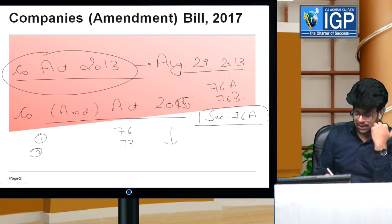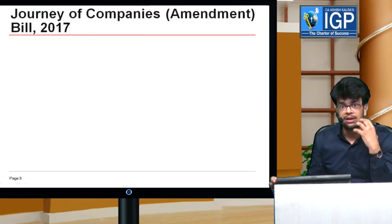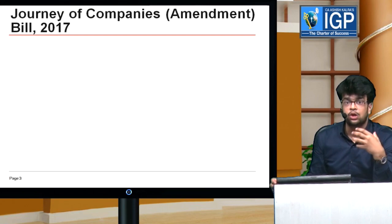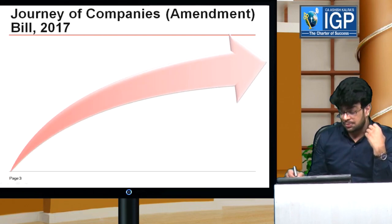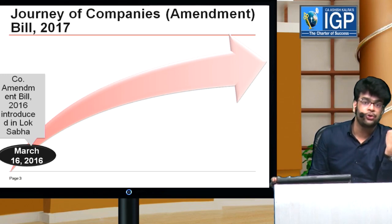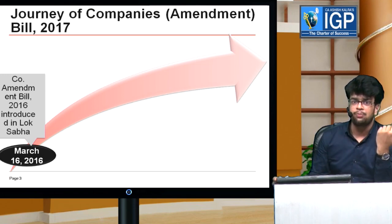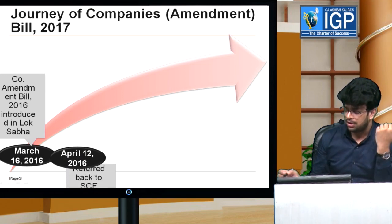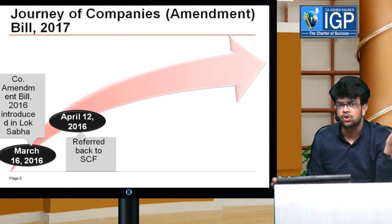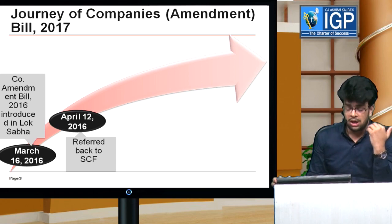Now we will talk about the Companies Amendment Bill 2017, which the government is going to pass. For that, we have to understand its journey. First of all, the Companies Amendment Bill was introduced in Lok Sabha on March 16, 2016. There were some loopholes and points for further deliberation. That's why the government referred it to a parliamentary committee — the Standing Committee for Finance — for further analysis, on April 12.